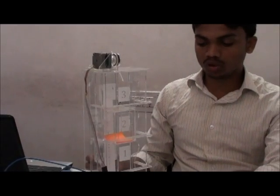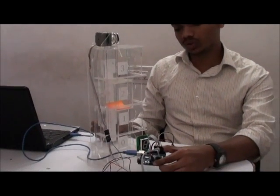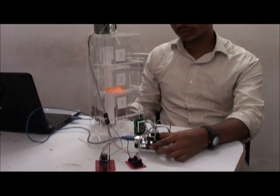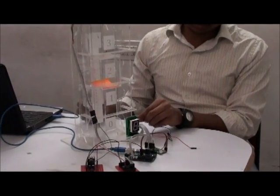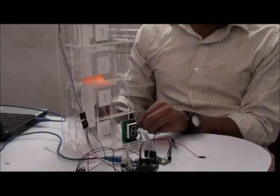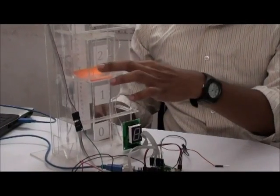This is my UNO board, Arduino UNO. This is the seven segment display to show the current floor where the compartment stands.